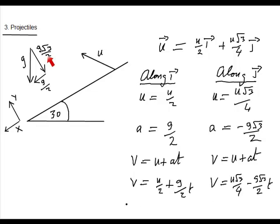And finally there's the s. s equals u t plus half a t squared. So it's u over 2 t plus half g over 2, which is g over 4 t squared. And s here is equal to u root 3 over 4 times t minus g root 3 over 4 t squared.